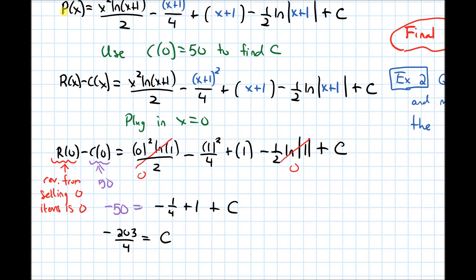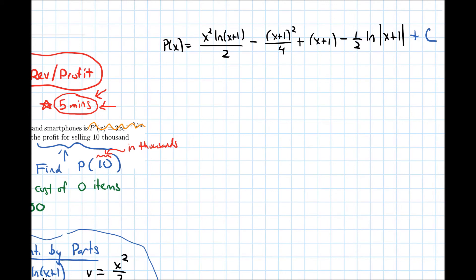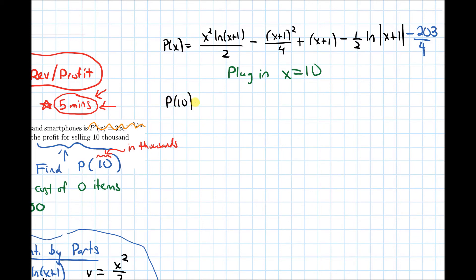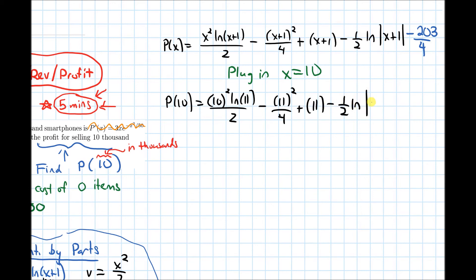Plugging c = −203/4 back into the profit function and then substituting x = 10, we get P(10) = 10²·ln(11)/2 − 11²/4 + 11 − (1/2)·ln(11) − 203/4.